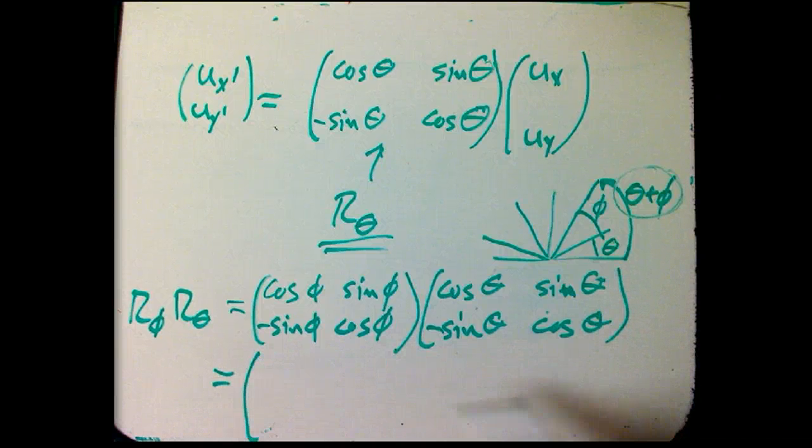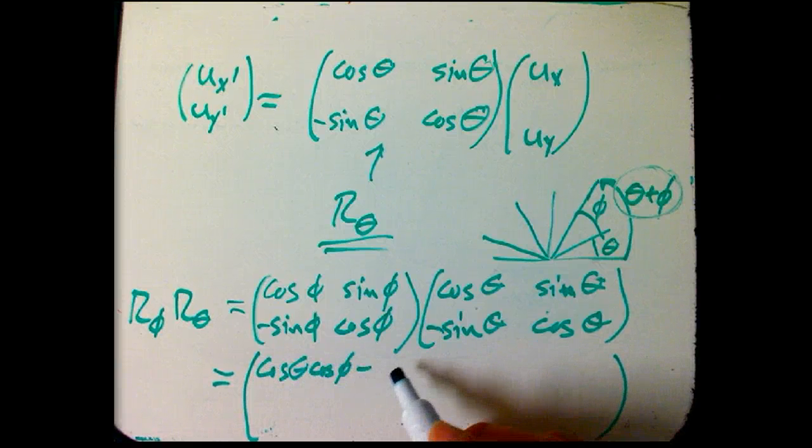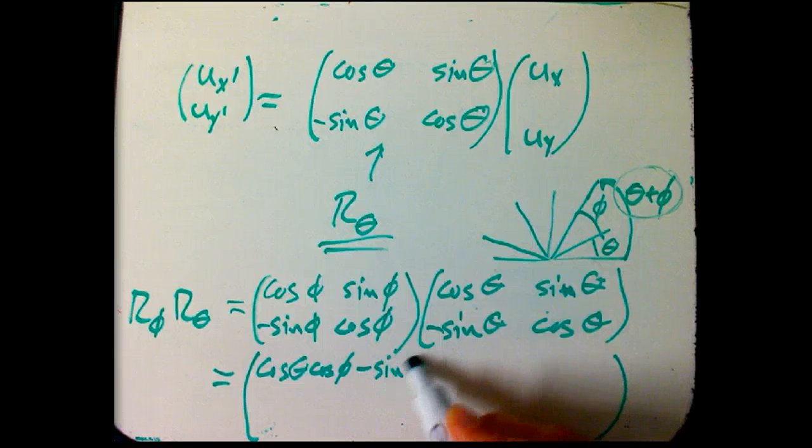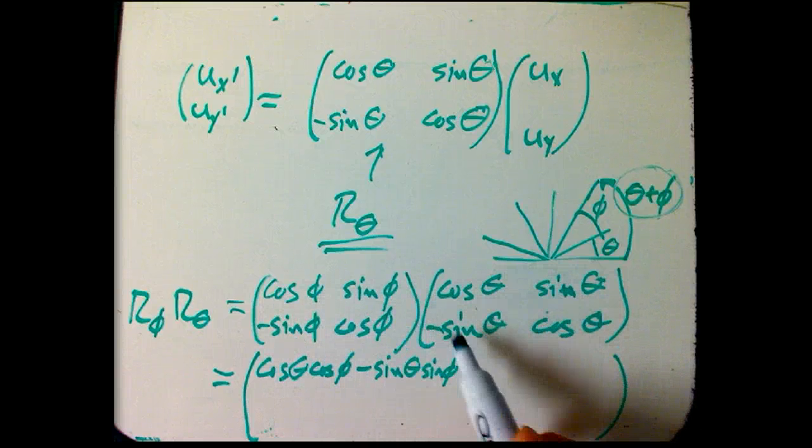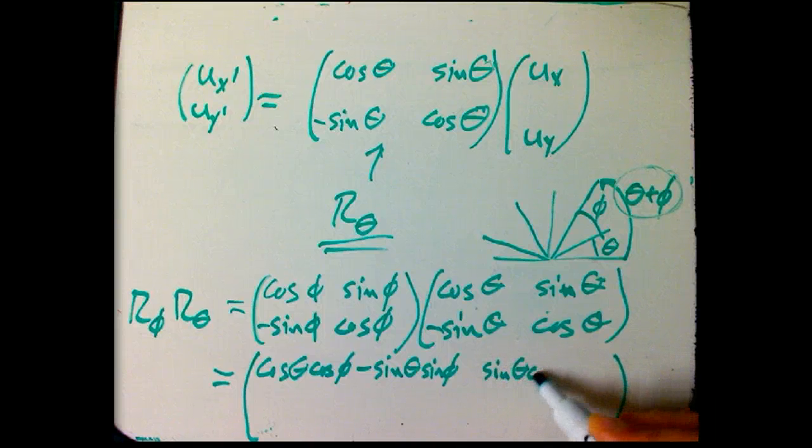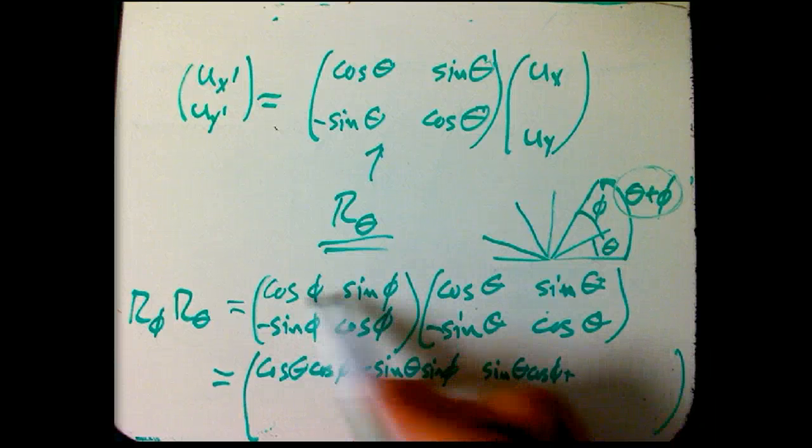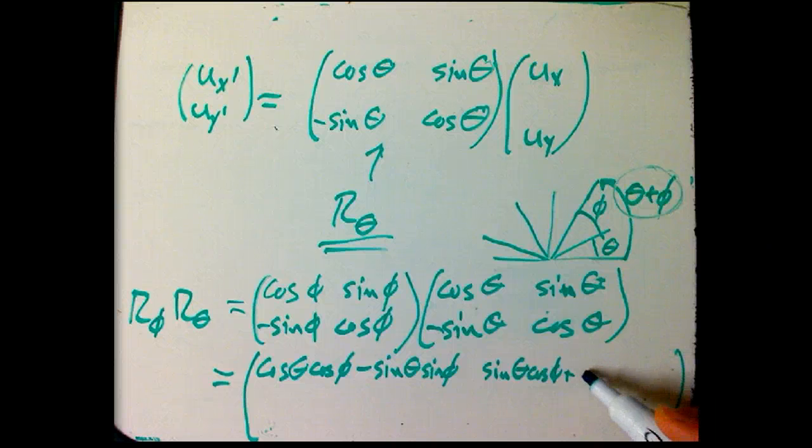Do a little matrix multiplication, get something kind of big, but it should start to look familiar. Cosine theta, cosine phi, minus sine theta, sine phi. So that's this with this, cosine, cosine, and minus sine, sine. And then we get sine theta, cosine phi, ooh, I need even more room. From this, paired with this, plus cosine theta, sine phi.